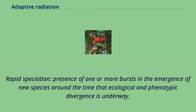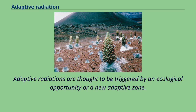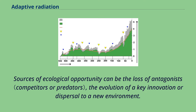Rapid speciation: the presence of one or more bursts in the emergence of new species around the time that ecological and phenotypic divergence is underway. Adaptive radiations are thought to be triggered by an ecological opportunity or a new adaptive zone. Sources of ecological opportunity can be the loss of antagonists, the evolution of a key innovation, or dispersal to a new environment.